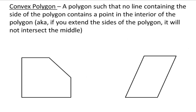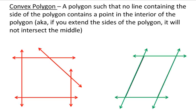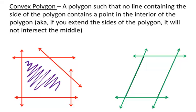There are different ways to classify polygons. The first way is if it's convex. A convex polygon is a polygon such that no line containing the side of the polygon contains a point in the interior of the polygon. It sounds kind of confusing, but basically, if you extend the sides of the polygon, it will not intersect the middle. So here I've extended all the sides of the two polygons below. Since none of them touch this middle portion, and here the center is still intact, none of the new lines I drew have gone into the middle, then we know these are convex polygons.